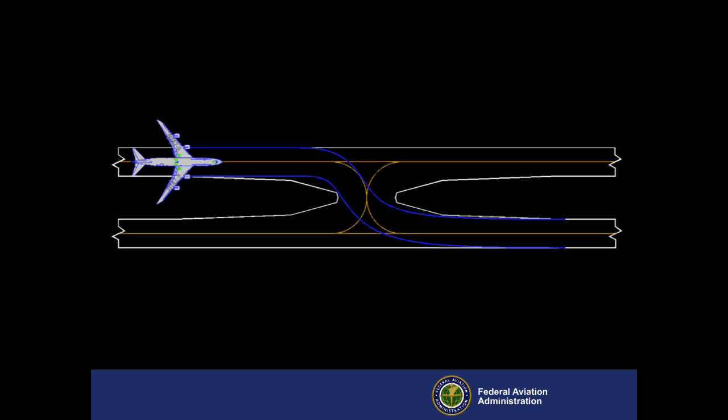As shown in this animation, when the capability for reverse turns is not necessary, the crossover taxiway can be much more narrow. For such crossover taxiways, the centerline layout is always two normal 90-degree turns.